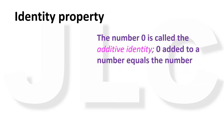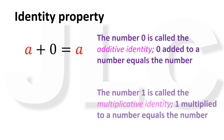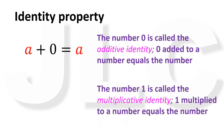The next property of real numbers is the identity property, which also applies to both addition and multiplication. In case of addition, the number 0 is called the additive identity. 0 added to a number equals the number: A plus 0 is equal to A. In case of multiplication, the number 1 is called the multiplicative identity. 1 multiplied by a number equals the number: A times 1 is equal to A.